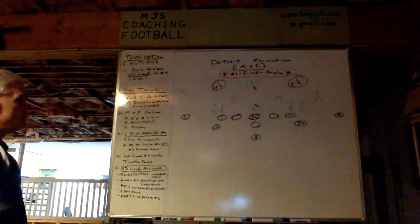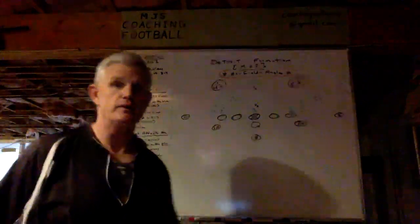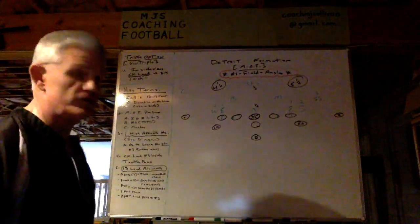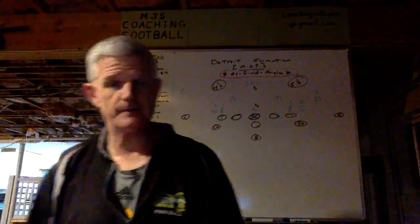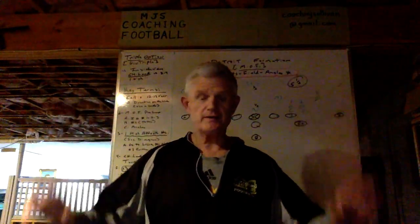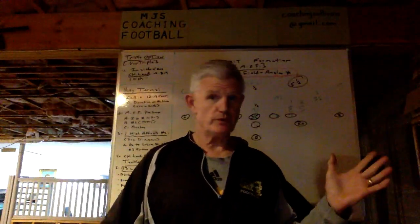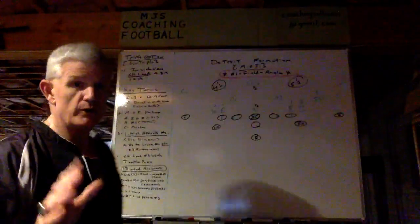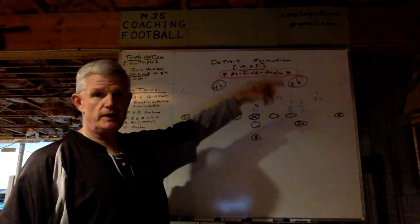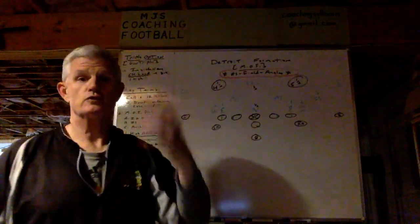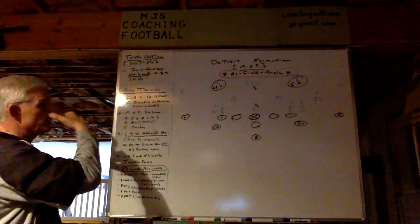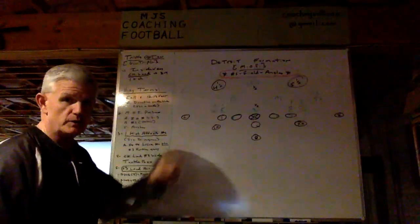The call in the huddle is 12-13 VIR. We use direction on the line of scrimmage with a code — I'm not going to go through the codes. Before all that, you go through your pre-snap routine. What do you got for total numbers? Where are numbers 1, 2, and 3? Following our mantra of numbers, fields, and angles. The numbers component is total numbers. This is our 2x2 formation, what we just called Detroit.